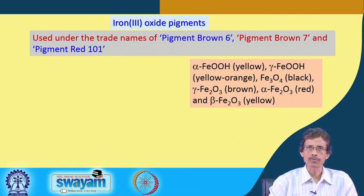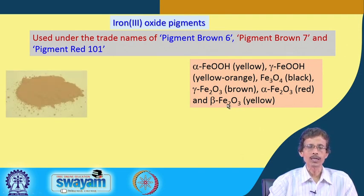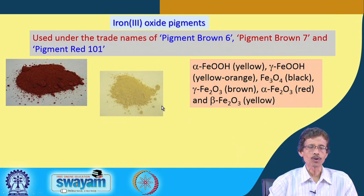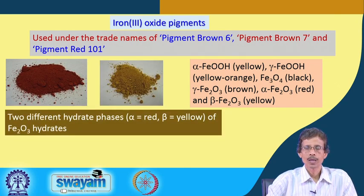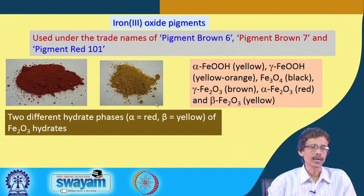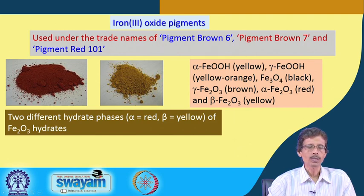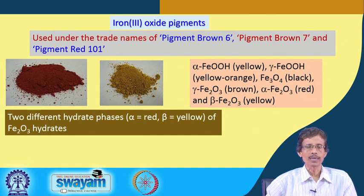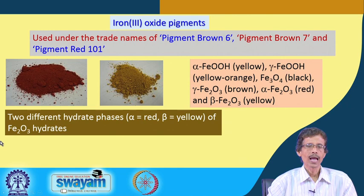The solid-state structures are different and their colors are different, which is why they can be used for different types of pigments. Two hydrated phases of Fe2O3 exist: the alpha form, which is red, and the beta form, which is yellow or dark yellow. These are used as iron oxide pigments with other additives for paints.